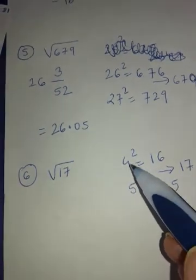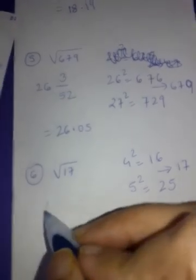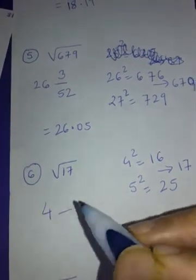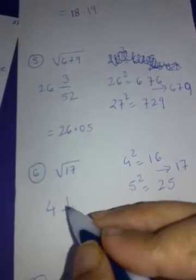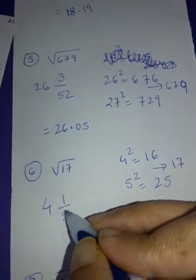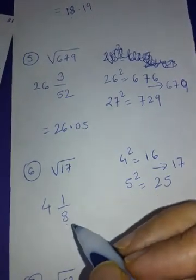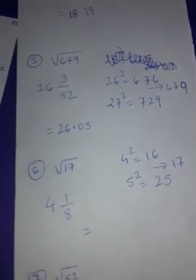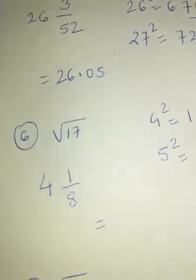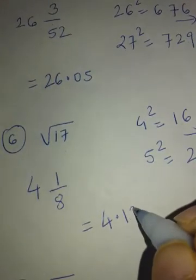17 lies here. So square root is going to be little more than 4. So I am going to write 4 here. Numerator will be difference between them that is 1. And double of 4 that is 8. So answer is 4, 1 by 8. What is 1 by 8? 1 by 8 is 0.12. So answer is 4.12.